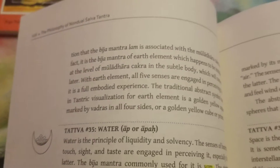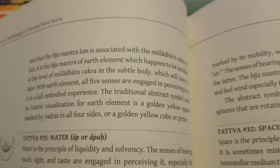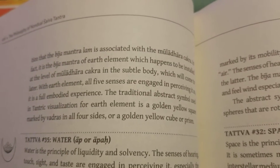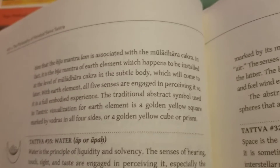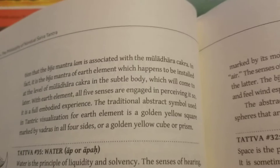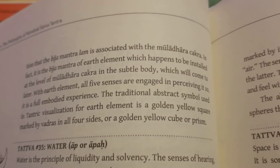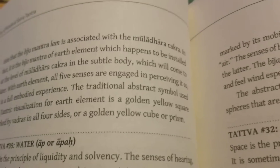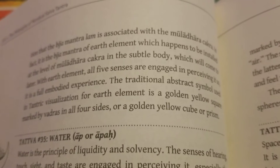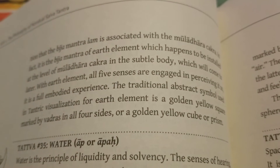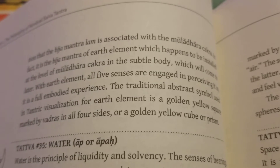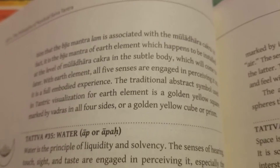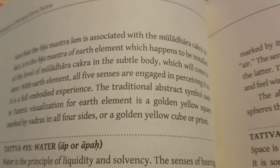Now there is a common misconception that the Beej Mantra LAM is associated with Muladhara Chakra. In fact, it is the Beej Mantra of the earth element, which happens to be installed at the level of Muladhara Chakra in the subtle body, which we'll come to later. With earth element, all five senses are engaged and perceiving it, so it is a full embodiment of experience. The traditional abstract symbol used in Tantric visualization for earth element is a golden yellow square marked by Vajras on all four sides, or a golden yellow cube or prism.